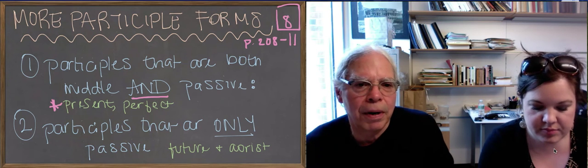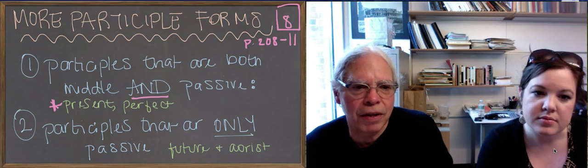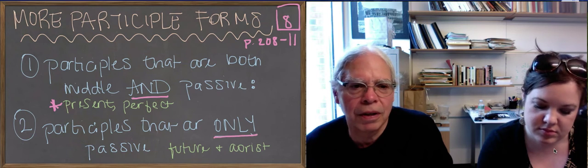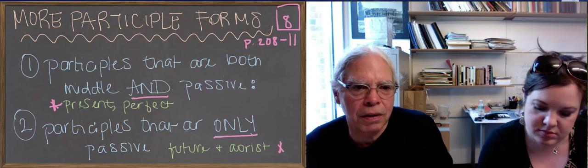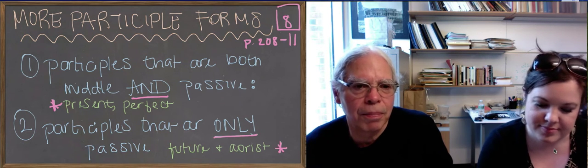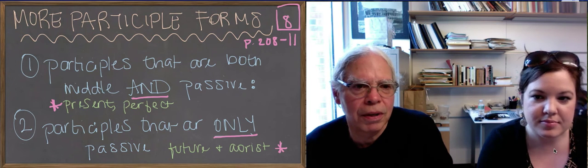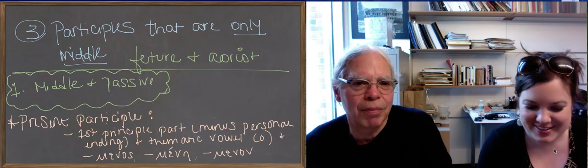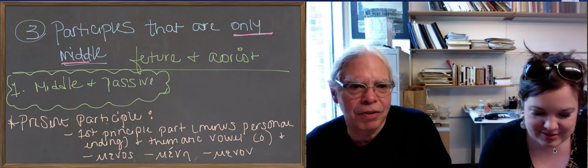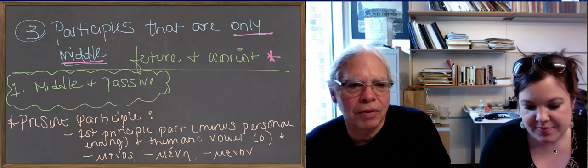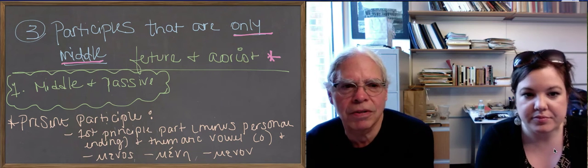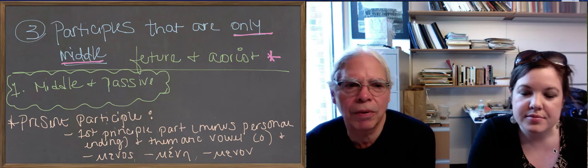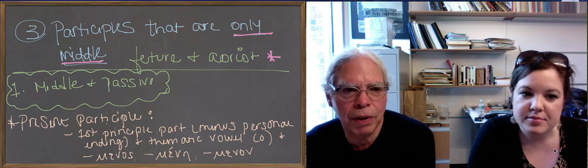There are participles that are only passive. That's the future and the aorist participles. And then correspondingly, finally, there are participles that are only middle. Namely, future and aorist participles. So we've got three sets here, and we're going to start with those that are both middle and passive.